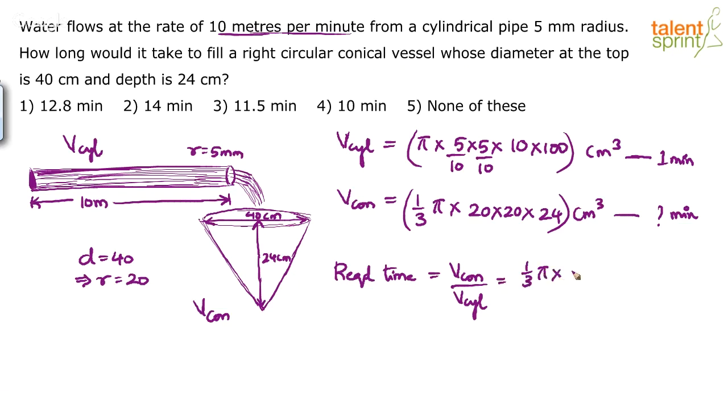So, 1 by 3 pi into 20 into 20 into 24 divided by pi into 5 by 10 into 5 by 10 into 10 into 100. You should directly write this. Simplify. Pi and pi gets cancelled. 10 and 10 and this 100 gets cancelled. 5 here goes 4 times. This 5 goes 4 times. This 3 here goes 8 times. So, answer will be 4 into 4, 16. 16 into 8. 16 into 8 is 128. 128 by 10, 12.8. So, 12.8 minutes. Option 1. Yes. Okay.